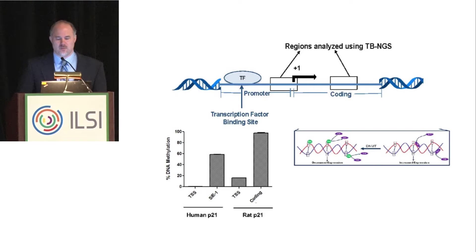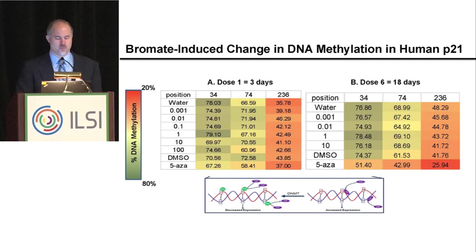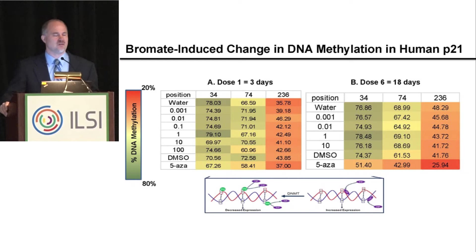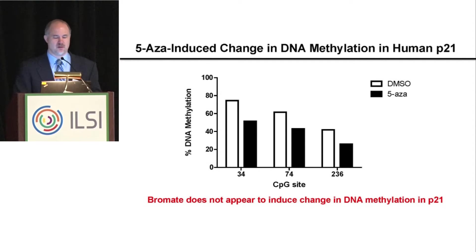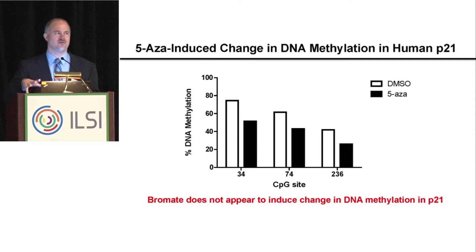We looked at the human P21 region, exposing cells to water and bromate at very low levels — one part per billion, ten parts per billion — with 5-azacytidine as a positive control. We identified specific sites within the DNA that would be changed with 5-Aza. Regardless of our method, we didn't see a change in methylation with bromate at all — we did with 5-Aza. So bromate-induced changes in P21 in rats and humans probably aren't because of methylation. That was a lot of work by my graduate student for essentially a negative finding, but it was really good because we identified key sites of methylation.